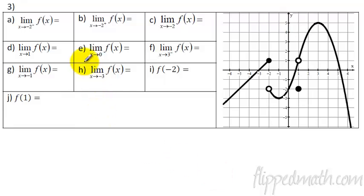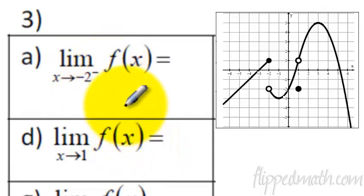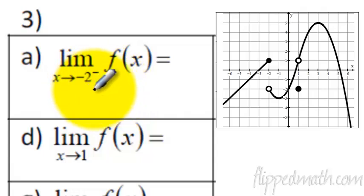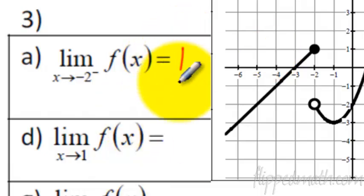Number three — here I've given you a graph, and we're going to figure out what all of these values are. Some of them are limits, and some of them are just what the y value is. The first thing to point out: that little negative sign up in the exponent. When it's in the exponent, this means we're approaching negative 2 from the left side only. So we come over to our graph and approach negative 2 only from the left side. That has a y value of 1, so this one is 1.